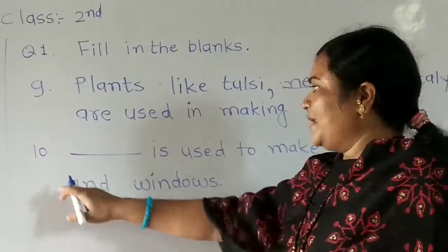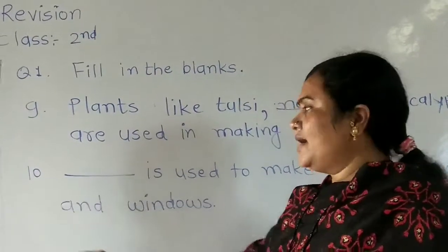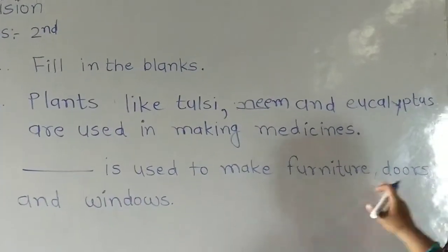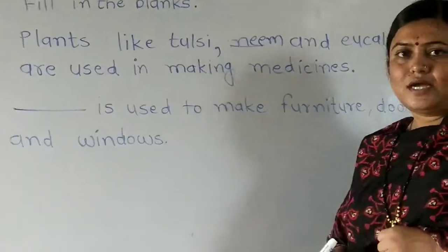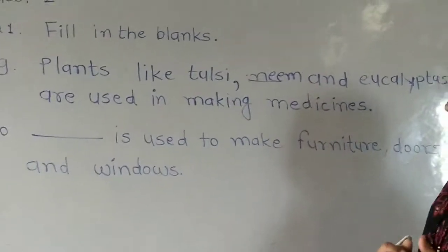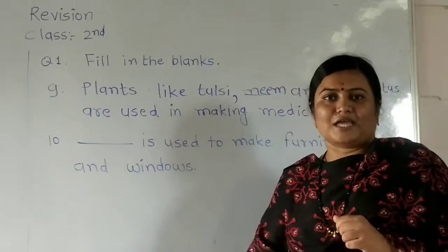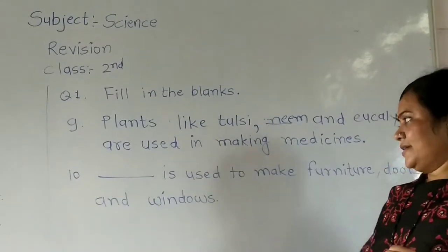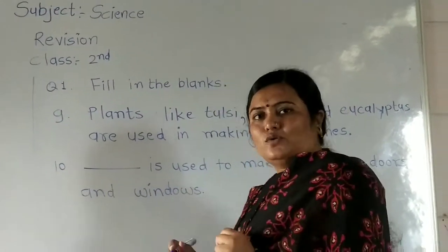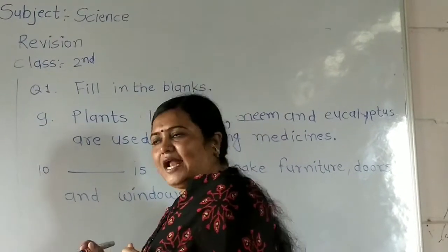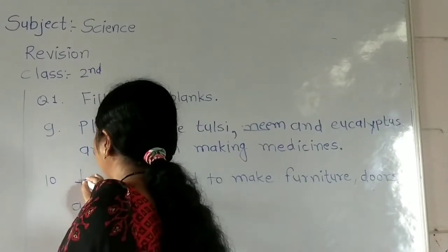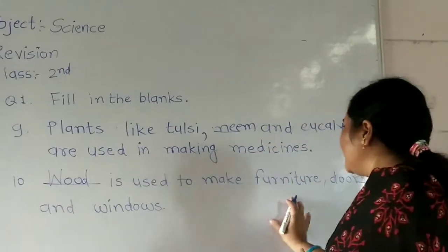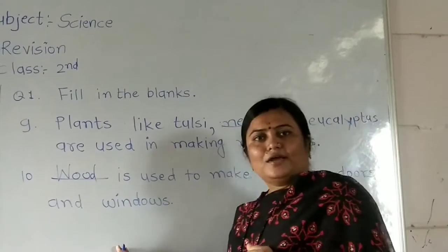Number 10: Dash dash is used to make furniture, doors, and windows. The answer is wood. Wood is used to make furniture, doors, and windows.